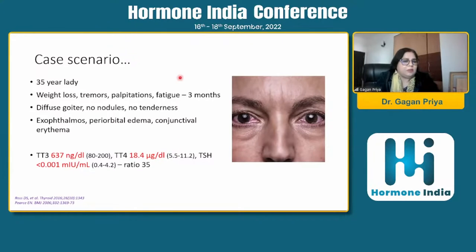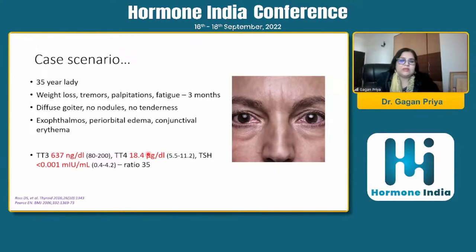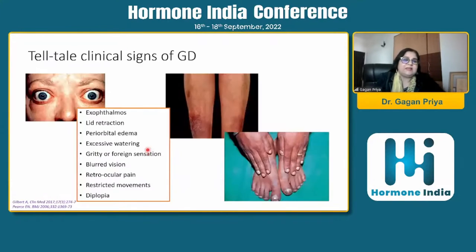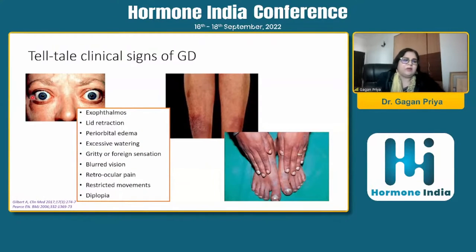A 35-year-old lady presents with thyrotoxic symptoms lasting three months, diffuse goiter with no nodules or tenderness. On examination there is clear exophthalmos, periorbital edema, and conjunctival erythema. The thyroid profile is suggestive of frank thyrotoxicosis. When the clinical picture is this strongly suggestive with telltale signs of Graves disease, a confident diagnosis can be made and therapy initiated without further investigations beyond what is needed for planning treatment.